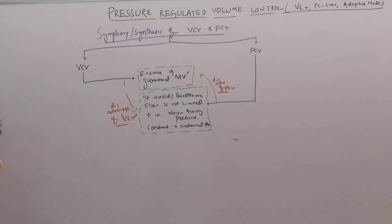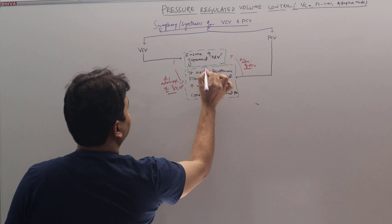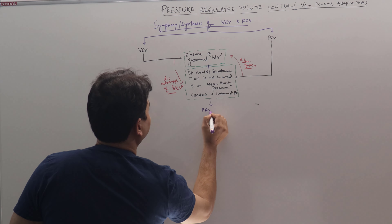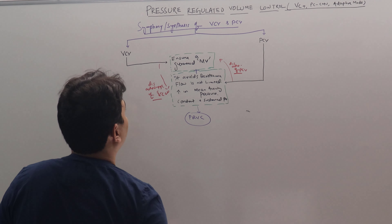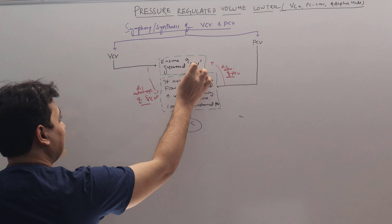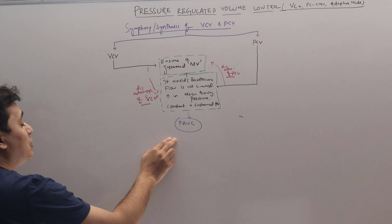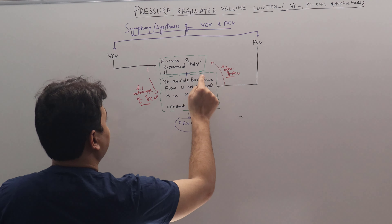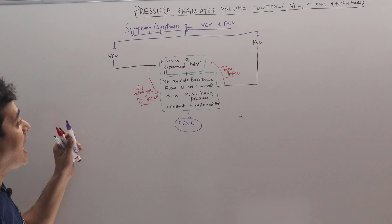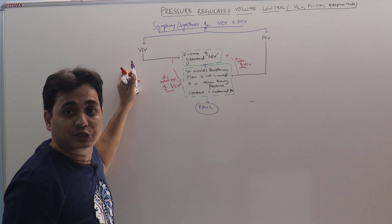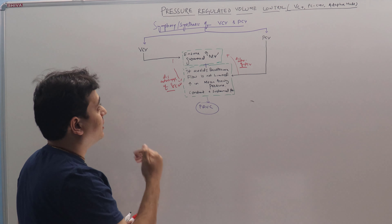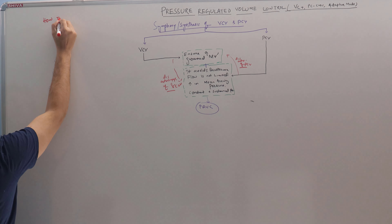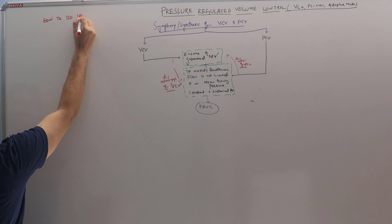So if we combine these two things, this is called PRVC. PRVC will provide a guaranteed minute ventilation, and at the same time it will provide the benefit of a pressure control breath as we have discussed. So now we have discussed what it is. Now we will discuss how it is done.